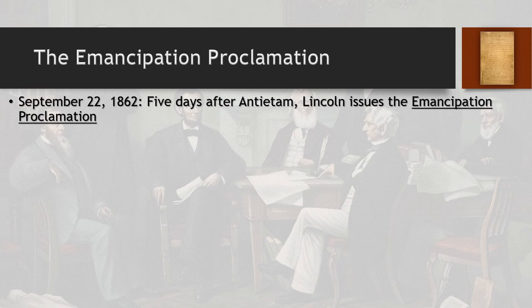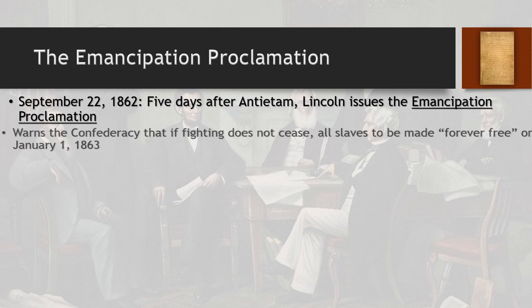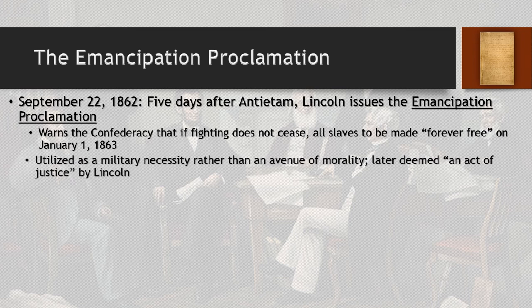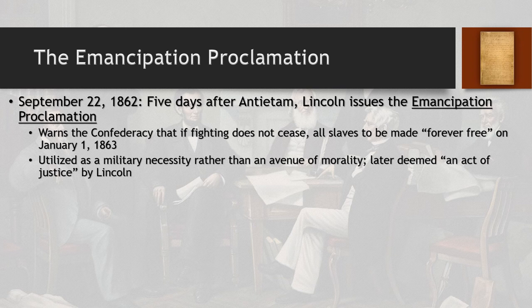Lincoln begins by issuing the Emancipation Proclamation in September of 1862, five days after Antietam. He warns the Confederacy that if fighting does not cease, all slaves will be made forever free on January 1st, 1863, using this as an executive order and bargaining chip. This is what the Confederacy feared most from his very first day in office — that slaves would suddenly be freed and potentially armed. Lincoln later calls this an act of justice, though he was originally motivated more by military necessity than morality. People have criticized Lincoln for not doing this sooner, though he had been trying to keep the Union stable.